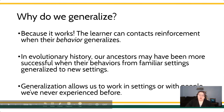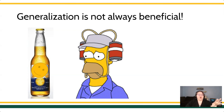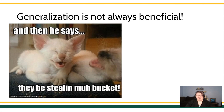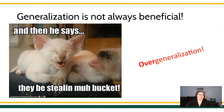That doesn't mean generalization is always good — we can, in fact, over-generalize. For instance, there are certain liquids with a light yellow color that would be fine to consume, but there are also other liquids with a light yellow color that would taste bad or even make you sick. Being able to discriminate between those liquids is a valuable repertoire as well. Over-generalization is where behavior occurs in the presence of a novel stimulus where it will not be reinforced, or potentially even punished.